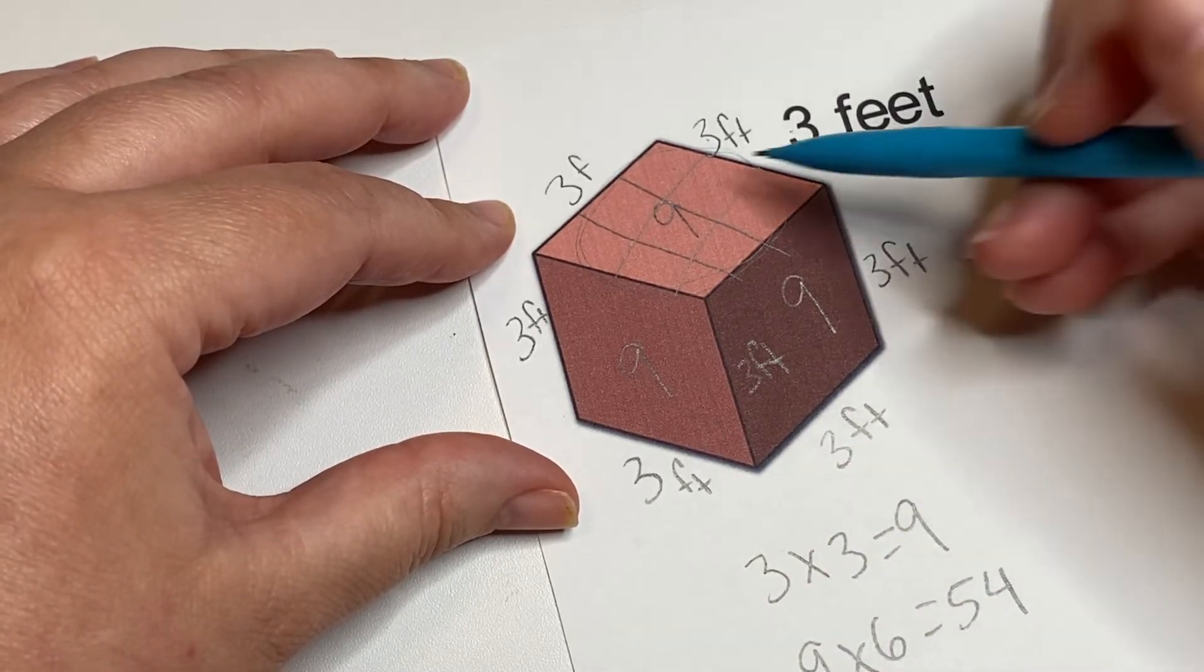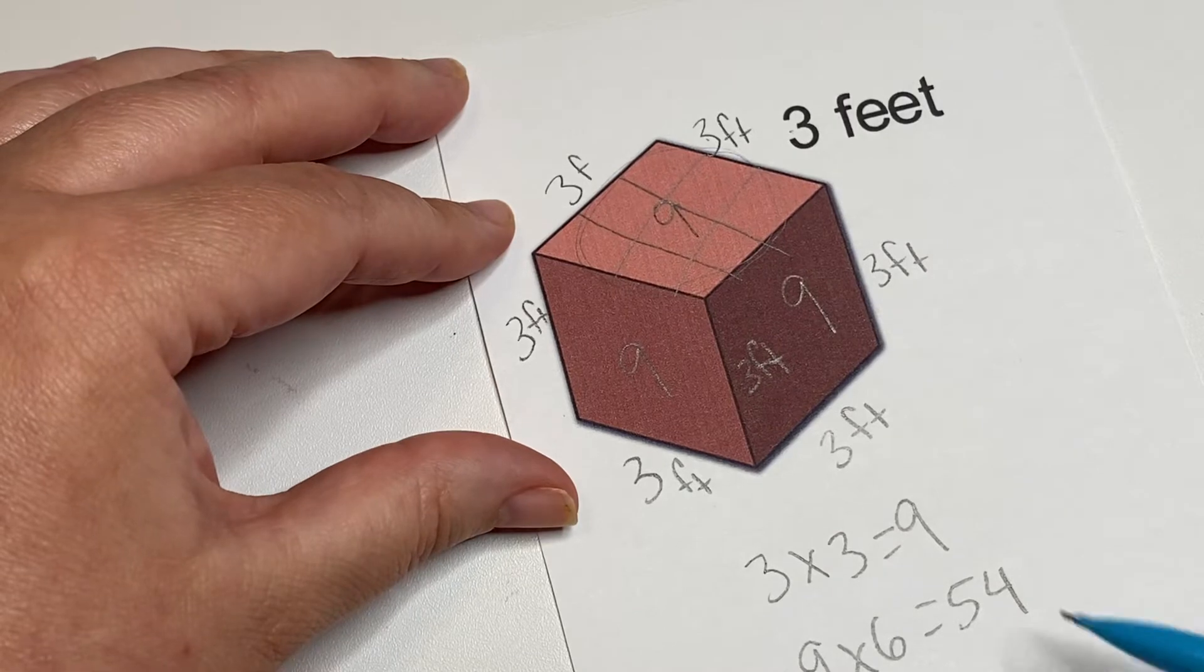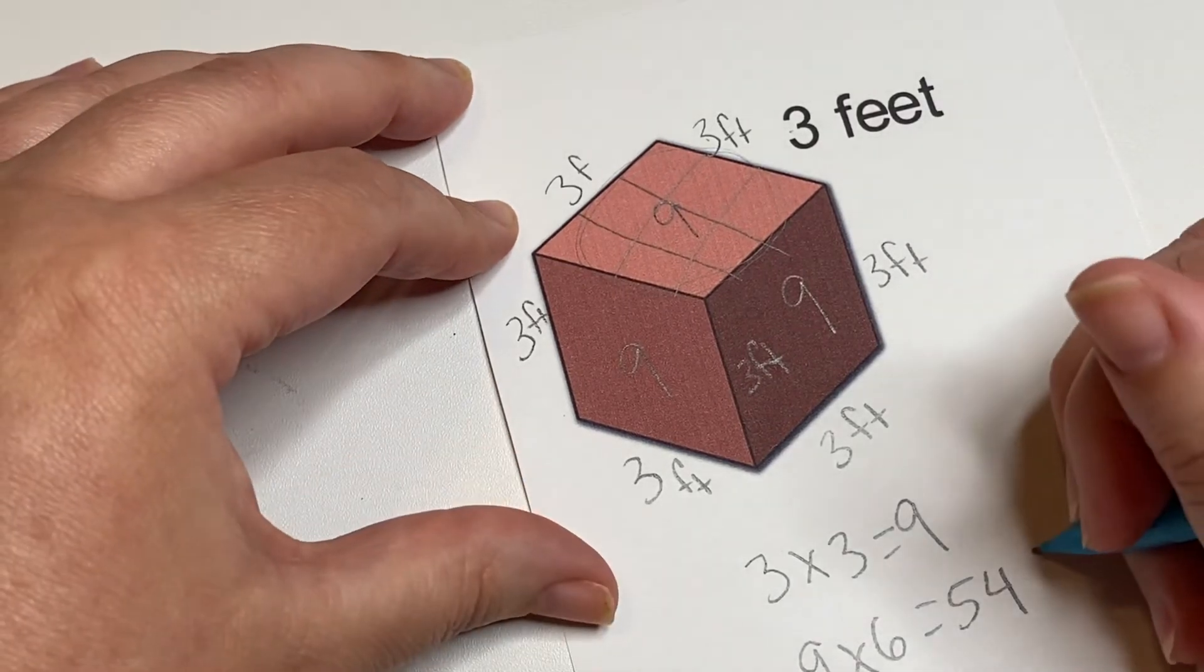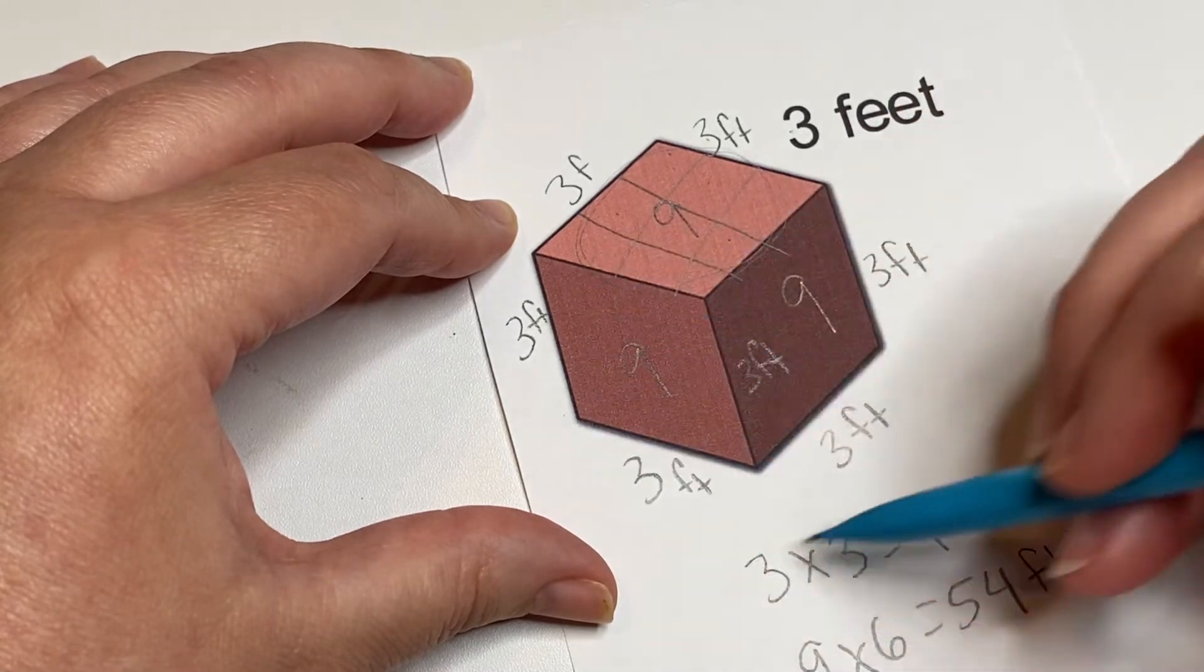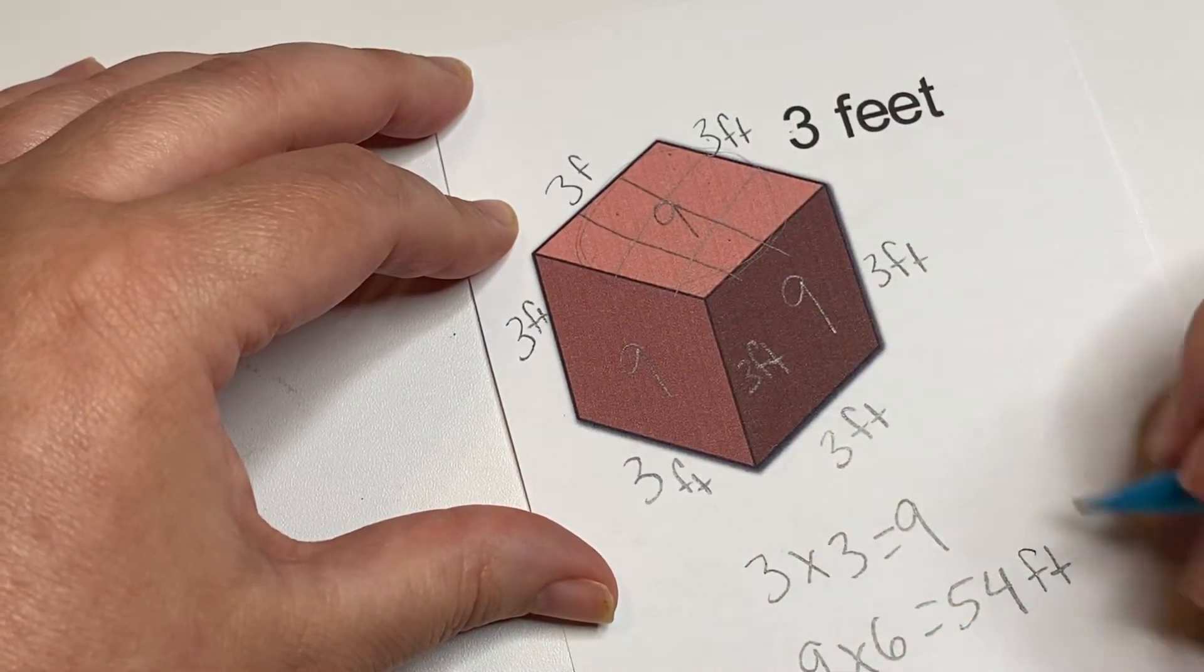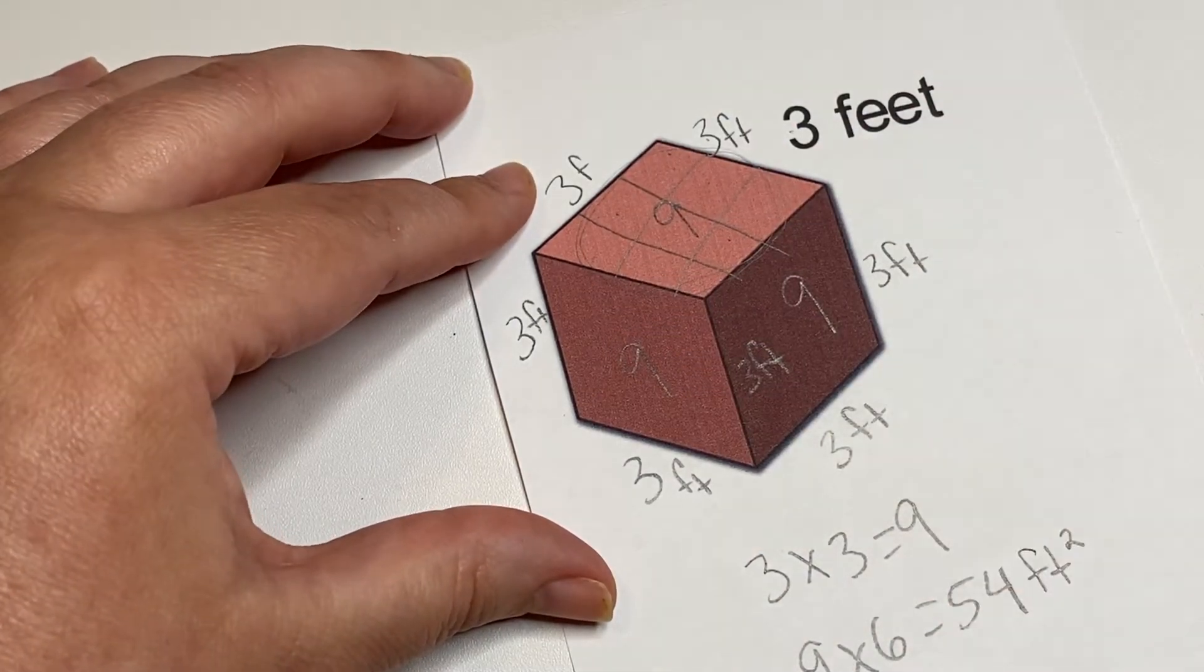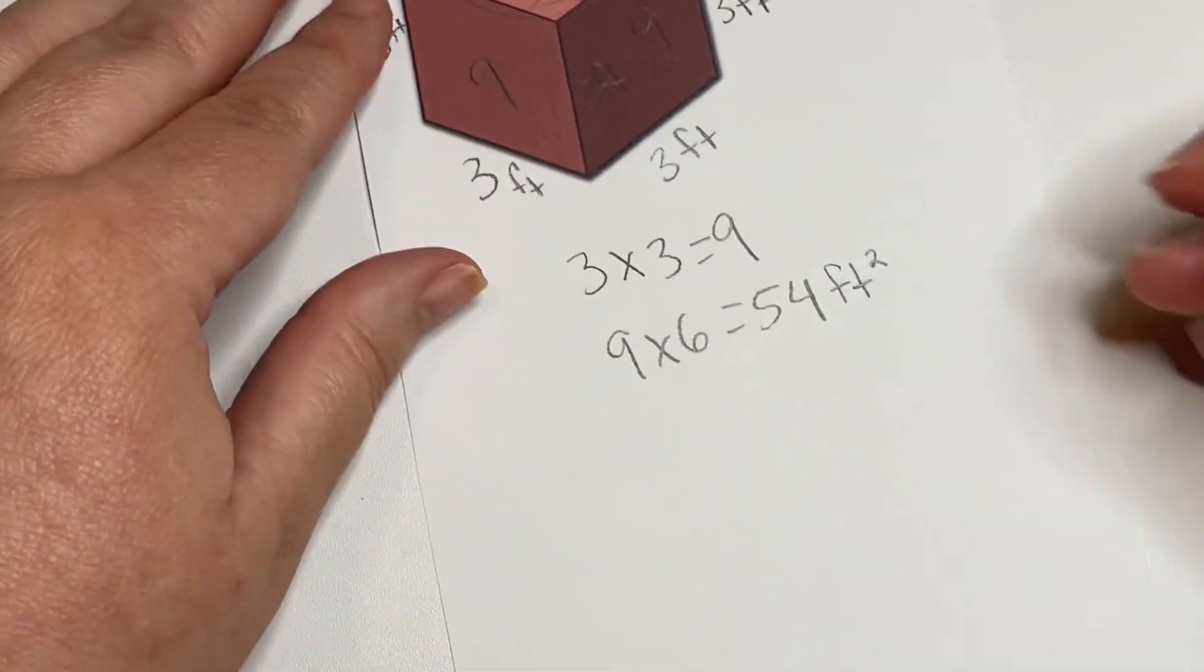So just like the one yesterday, this is the cube version and it would be 54. This time we have feet, and we're talking about 54 of these squares to cover the entire cube, so it's going to be squared. Okay, let's look at another example.